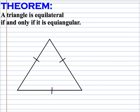Earlier we've talked about equilateral triangles and equiangular triangles and we had this theorem from the first day's notes: a triangle is equilateral if and only if it is equiangular. So here we have an equilateral triangle.